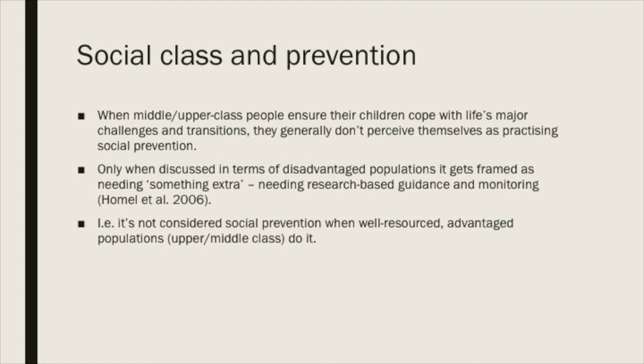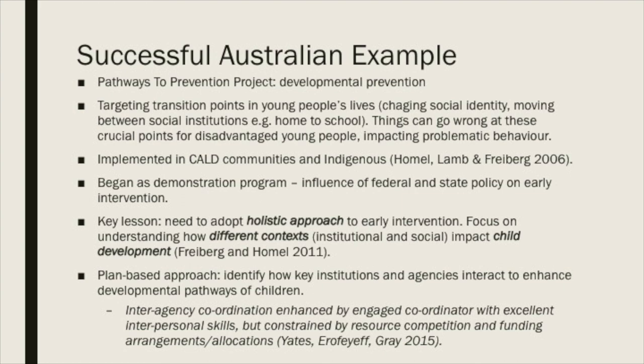Have a look at the link provided in this week's materials to the Pathways to Prevention project. It has had an influence on federal and state policy on early intervention. The key lessons are that we need to adopt a holistic approach to early intervention and understand how different contexts impact child development. It argues for a plan-based approach: identify how key institutions and agencies interact to enhance the developmental pathways of children. Research finds that interagency coordination is enhanced by an engaged coordinator with excellent interpersonal skills, but tends to be constrained by resource competition and funding arrangements.